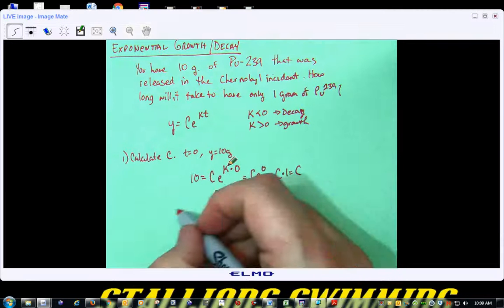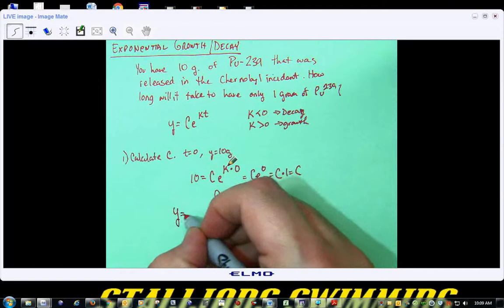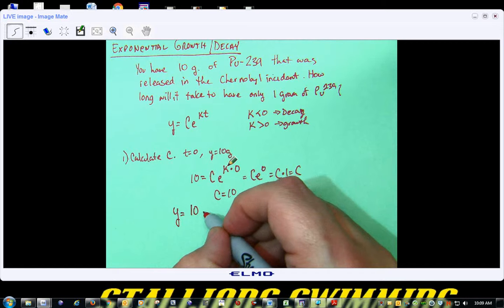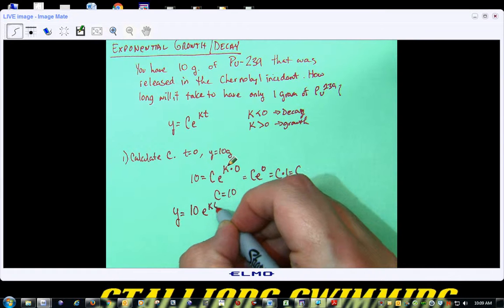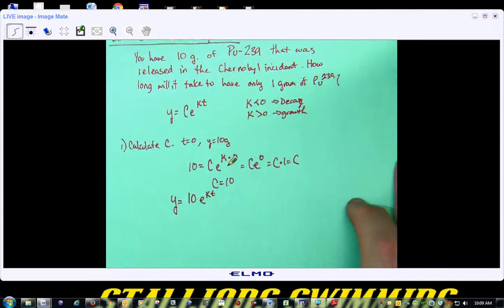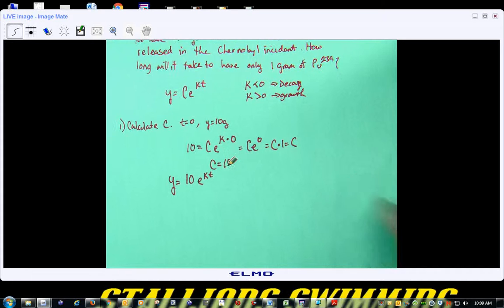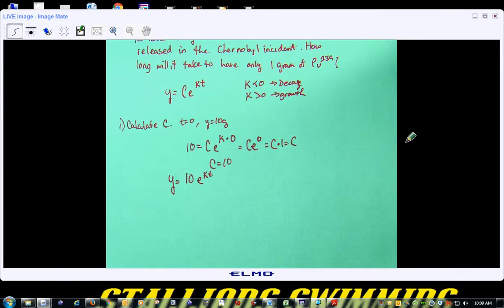So, I know Y is equal to ten e to the KT power. So, your calculation is usually going to, you're going to get an XY value, or in this case a TY value of some kind. And usually it's an initial condition.